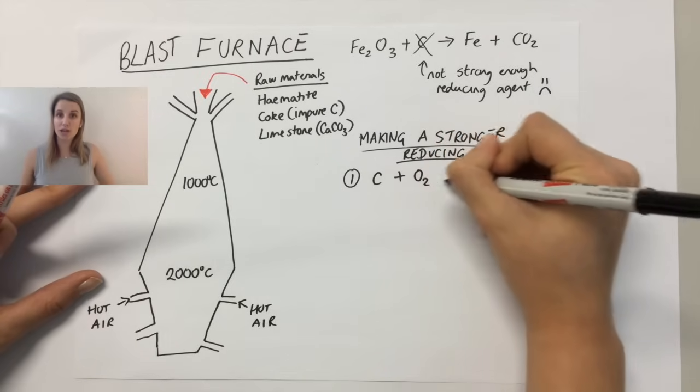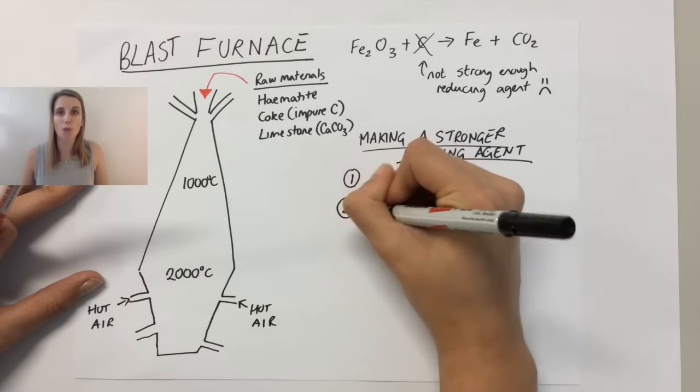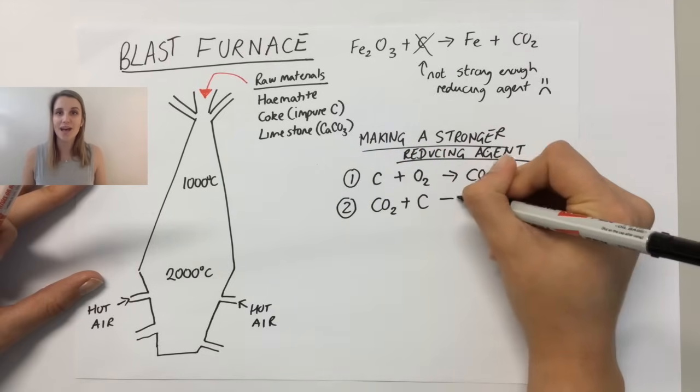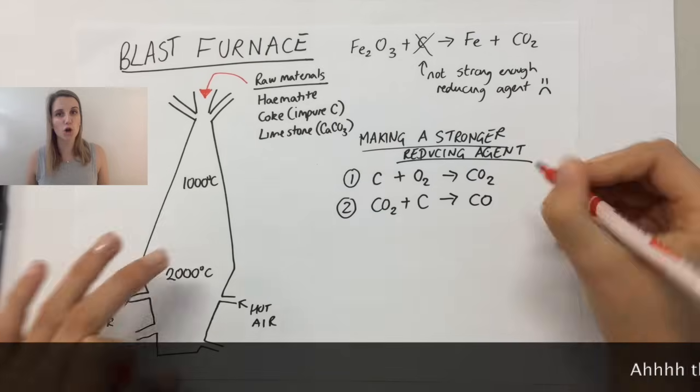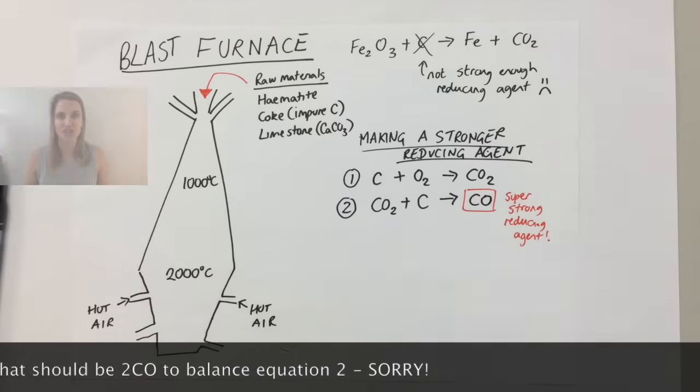What then happens is, because it's super hot, the carbon dioxide can react with the rest of the carbon that's in the blast furnace. And this makes carbon monoxide, which is super dangerous, but is also a super strong reducing agent.